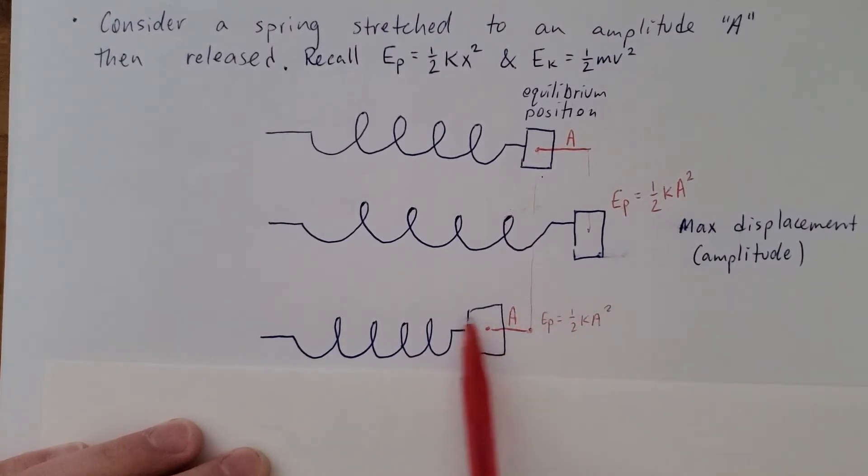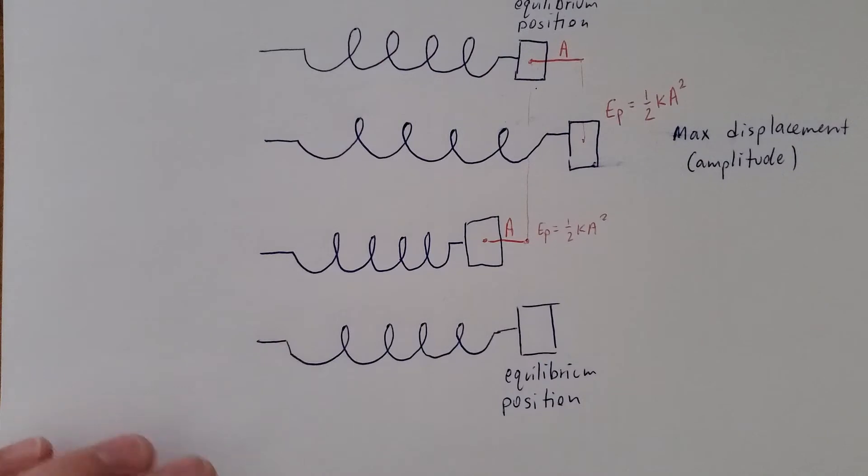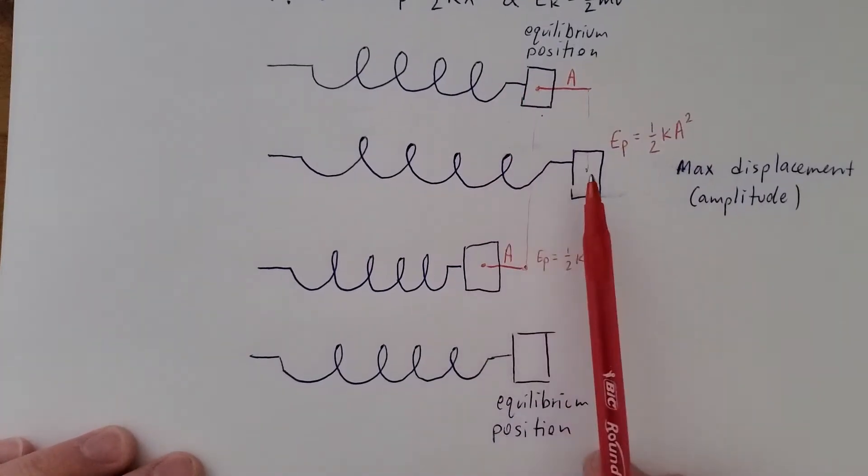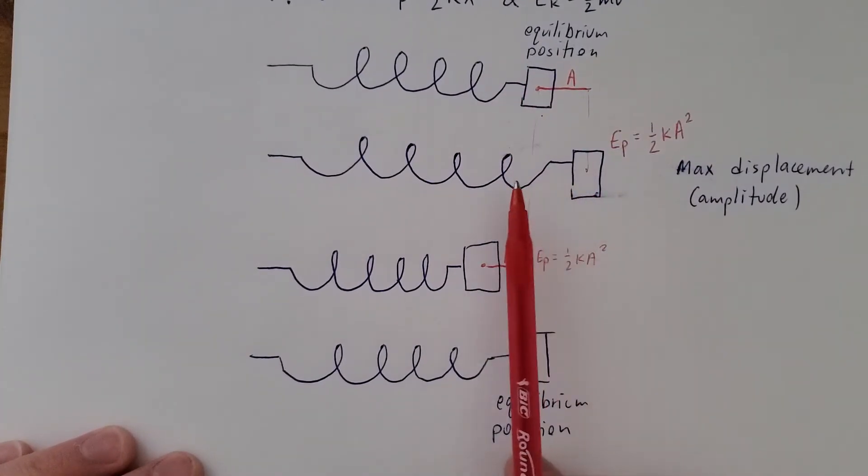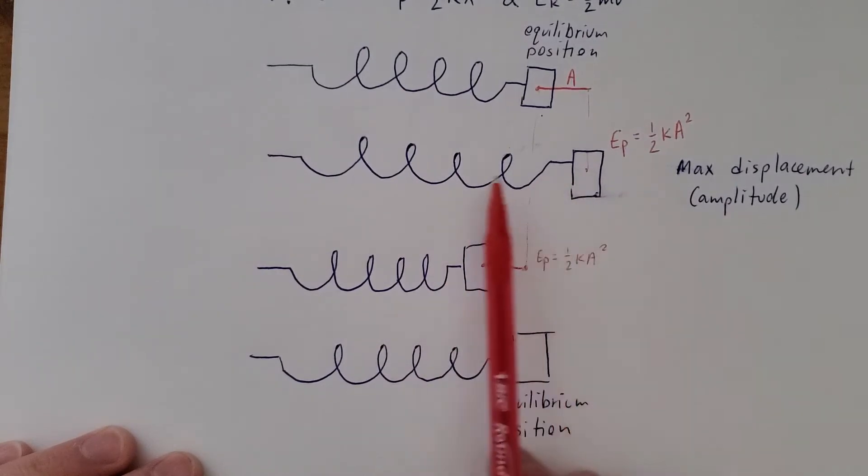As it goes back and forth, it's going to pass through the equilibrium position again. So we stretched it, let it go, moved all the way left to an amplitude, and it's just wobbling back and forth. But I want to talk about when it passes through the equilibrium position.